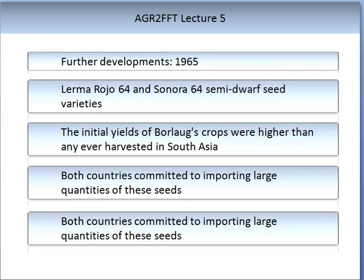The first time these varieties were grown in both India and Pakistan, the highest yield production rates were recorded for Southeast Asia — an absolutely incredible and huge step forward for both countries. Both countries committed to importing large quantities of these seeds. Interestingly, in the first years these were tested, there was actually a war outbreak between Pakistan and India, which made the logistics of testing these crops even more complicated.